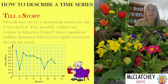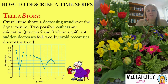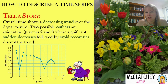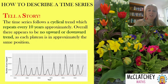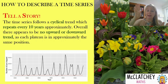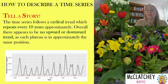In this particular graph, we can see an overall decreasing trend over the three-year period. There are two possible outliers appearing in quarter two and quarter nine, where there's significant decreases followed by a rapid recovery that's disrupting the trend. In this next graph, we can see a cyclical trend repeating approximately every 10 years. There appears to be no upward or downward trend as each plateau is in approximately the same position — marked in red, just a little bit above zero. So it grows, falls back, grows, and falls back, hitting the same bottom every single time.